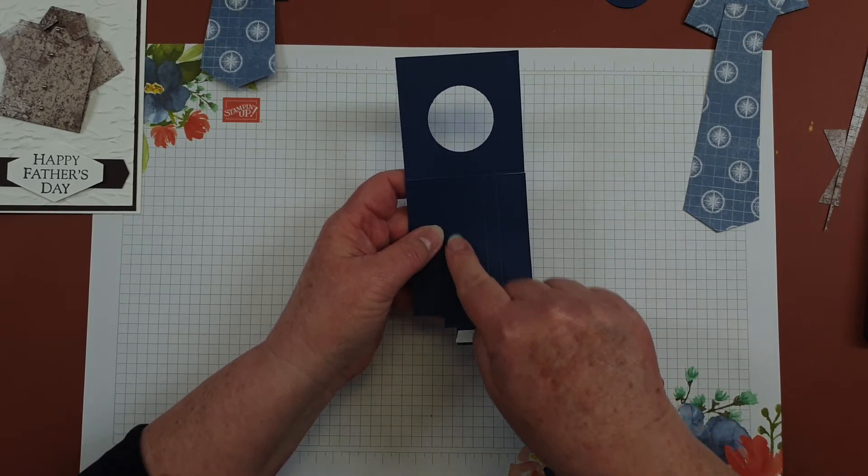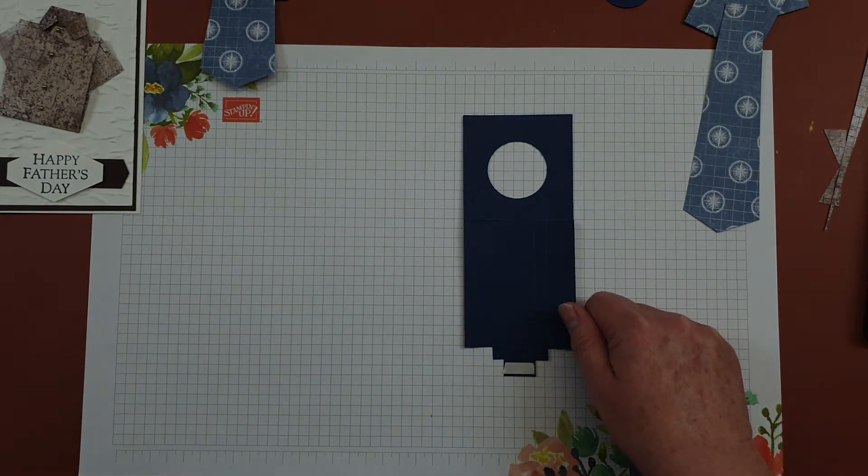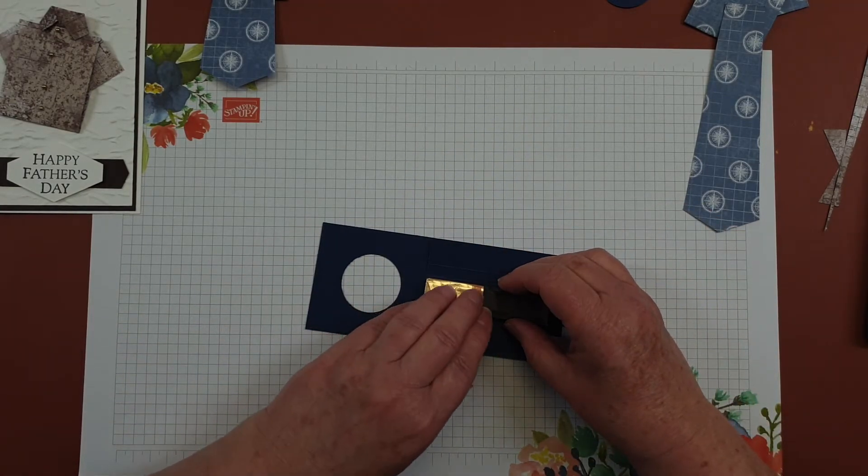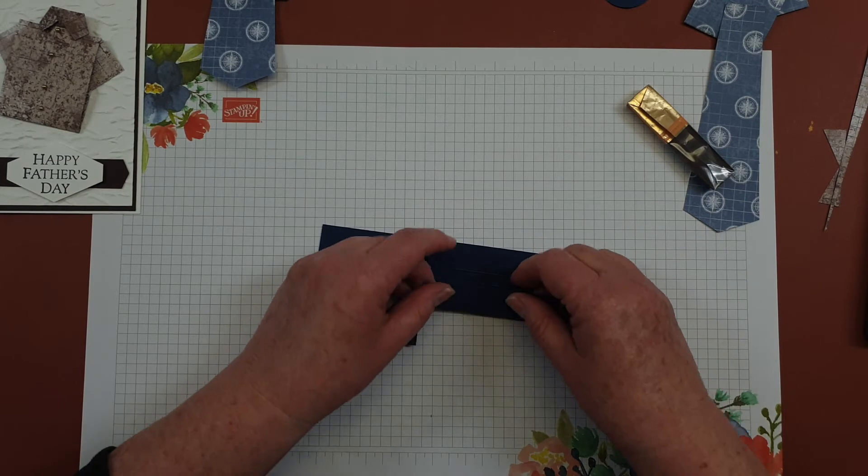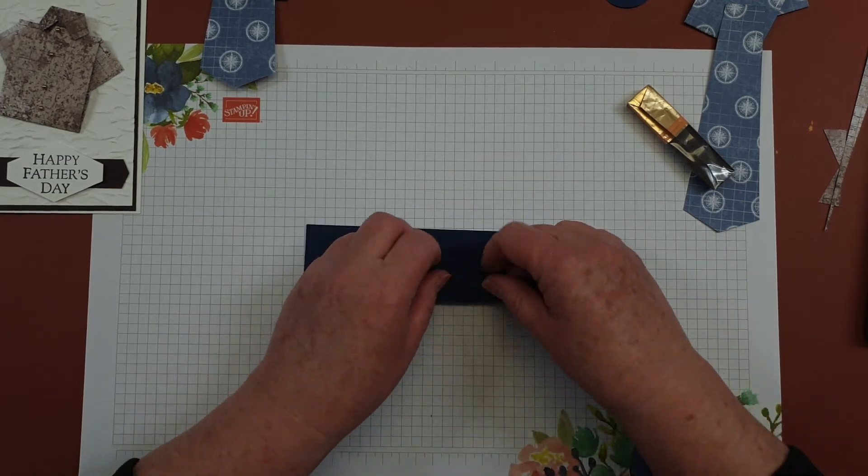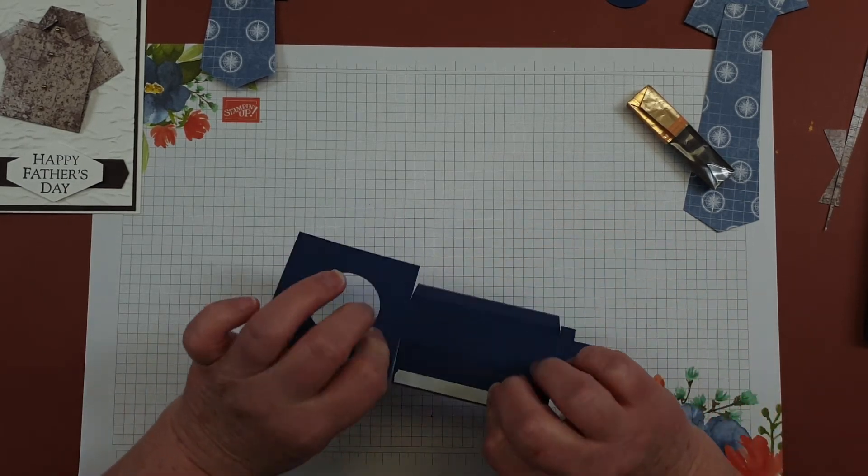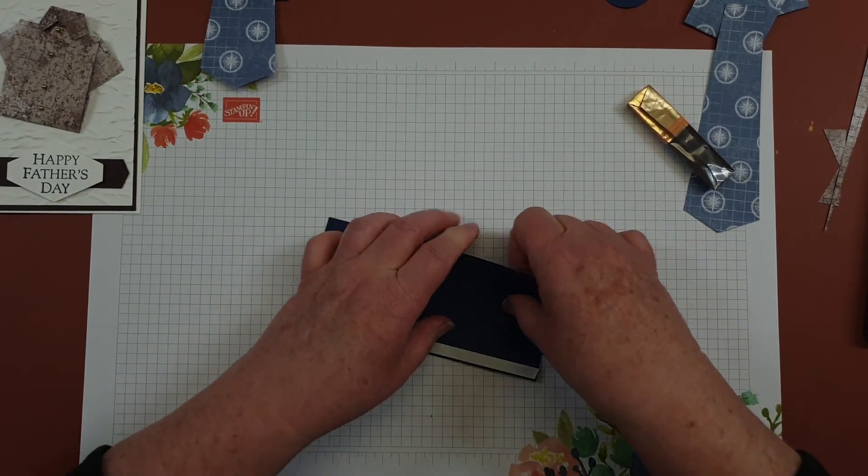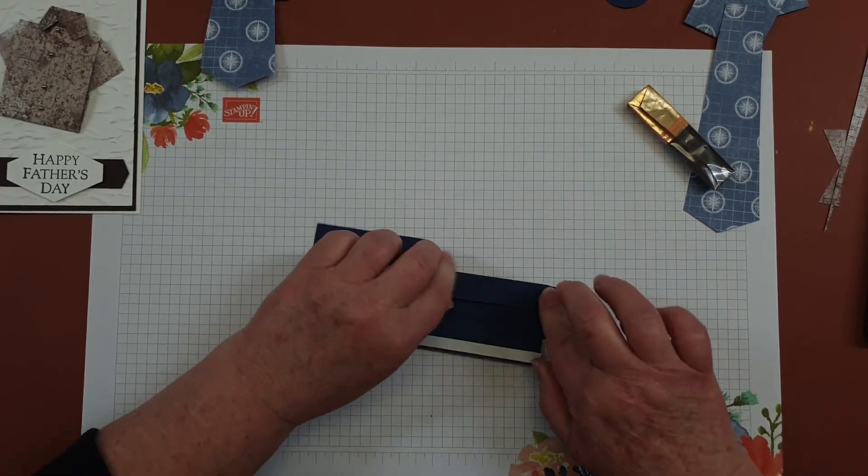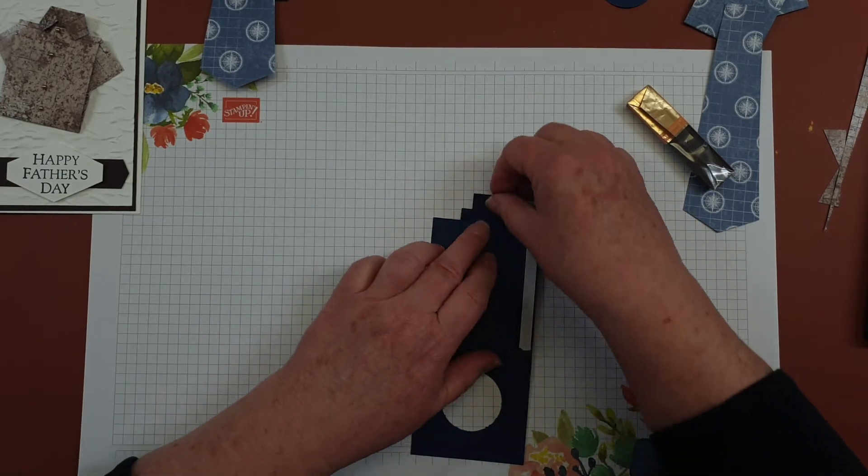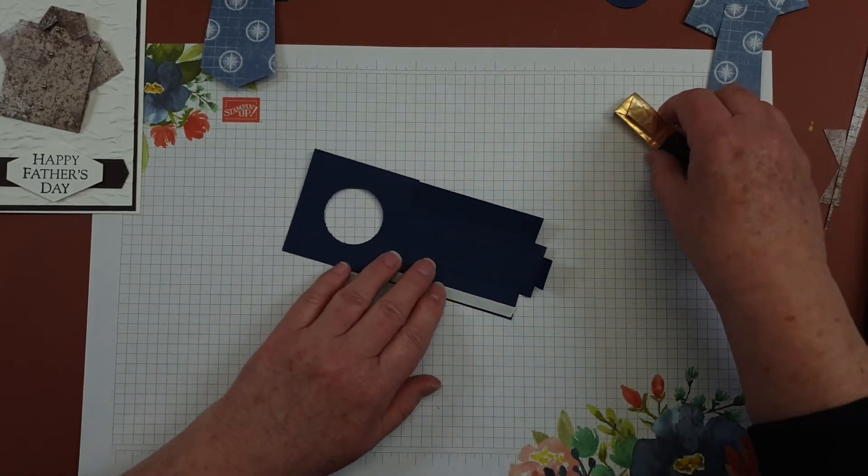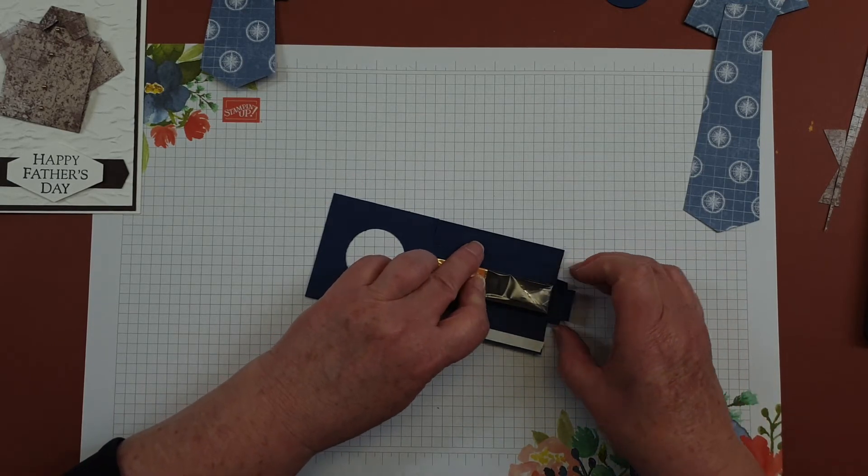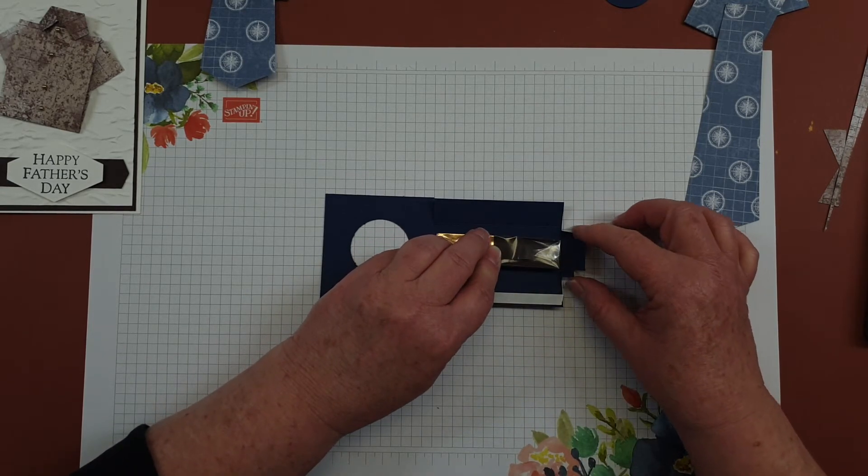Then I grab my chocolate and I'm going to put it in that little area there. Actually, before I do that, I need to fold along all those score lines like that, and these bottom ones up. All right, so now I can put my chocolate down, and the first thing I'm going to do is bring in that little bottom section.